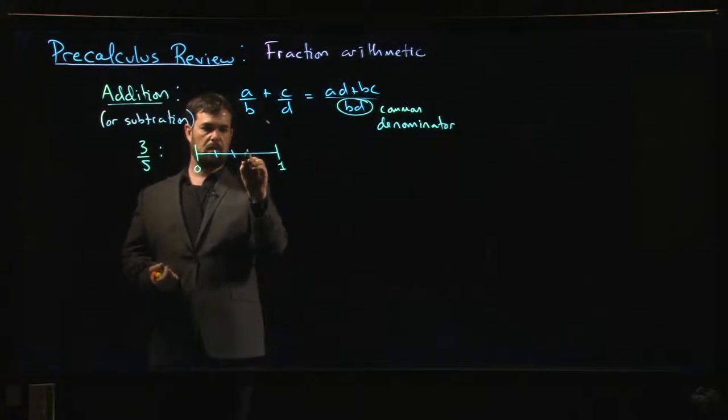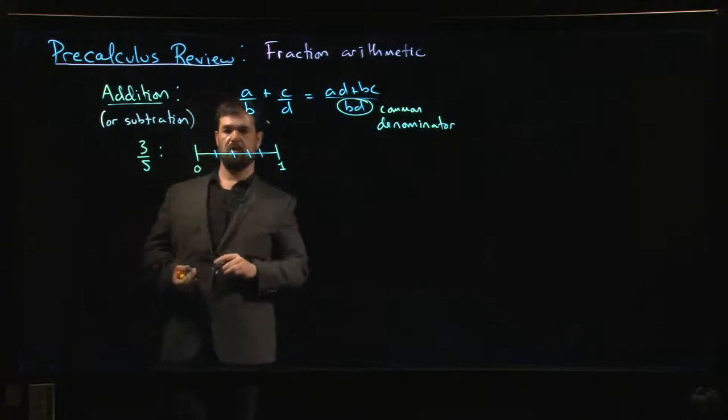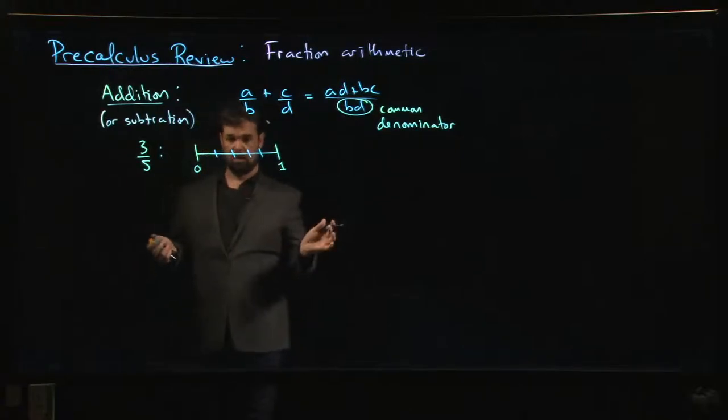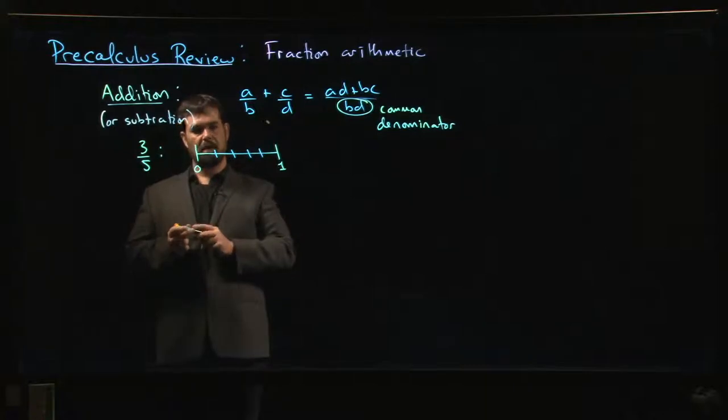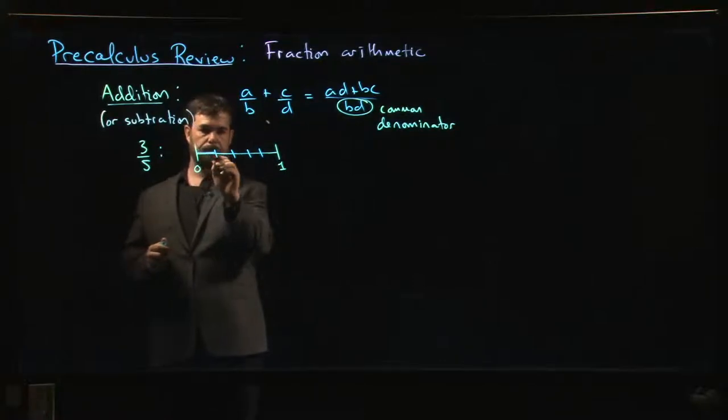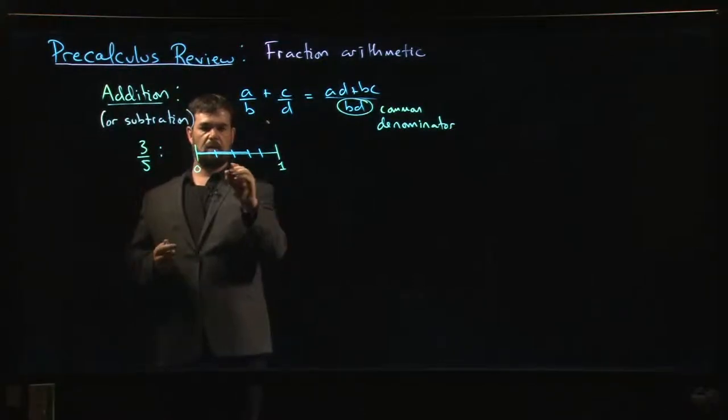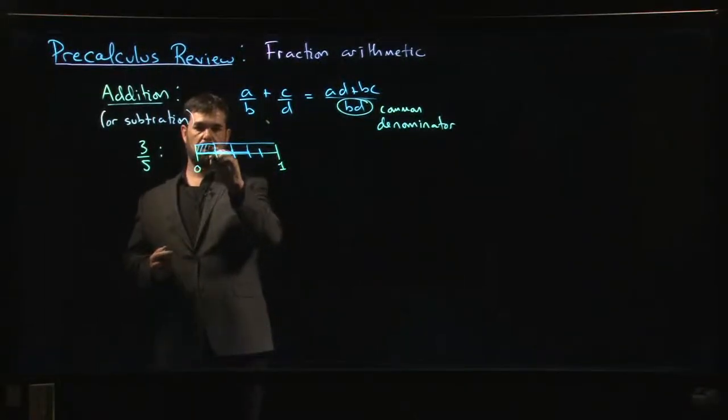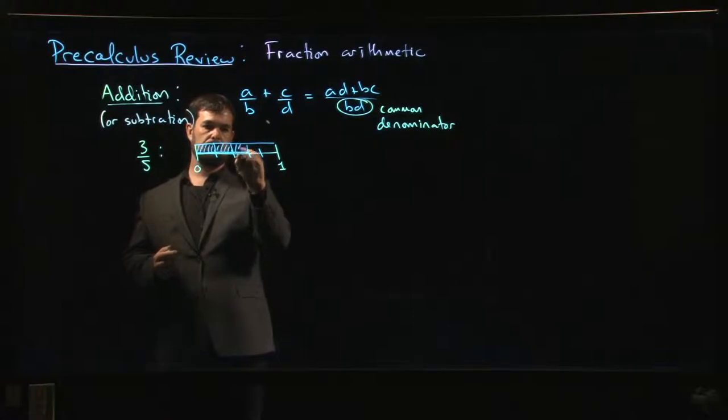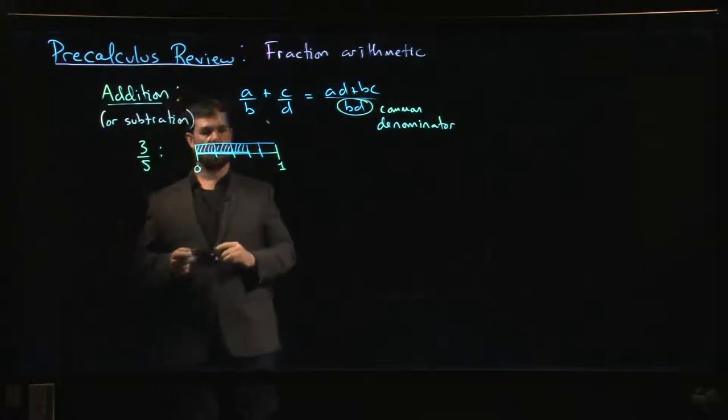The denominator tells you how many pieces you should cut your interval into—those are supposed to be five equal pieces. The numerator tells you how many of those pieces you should keep, so we should keep three of them.